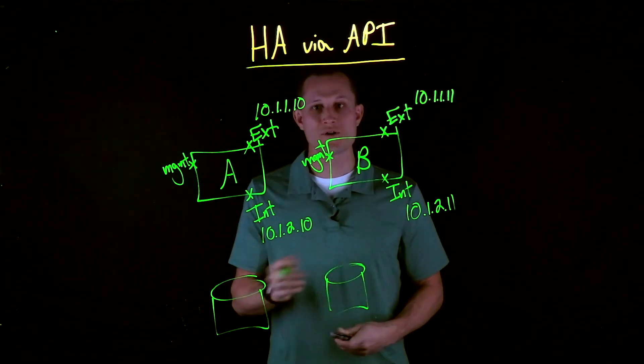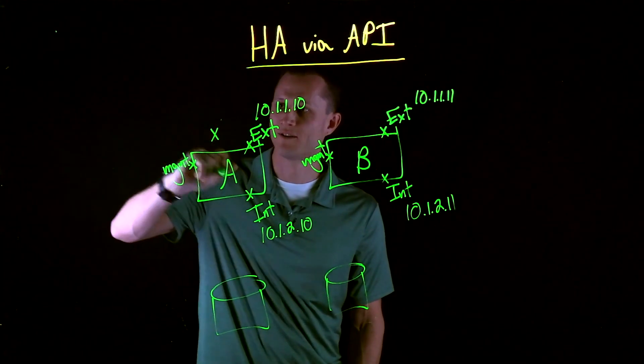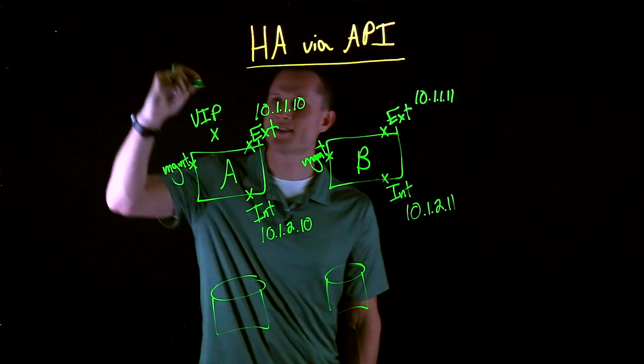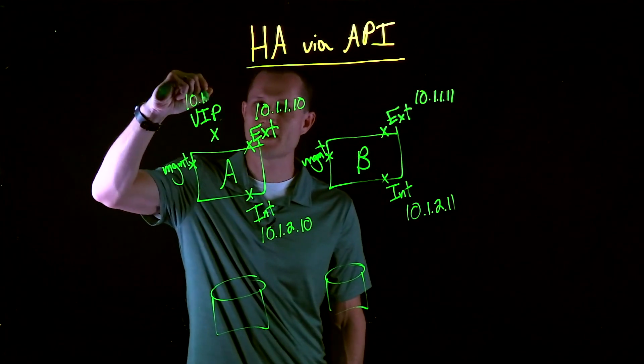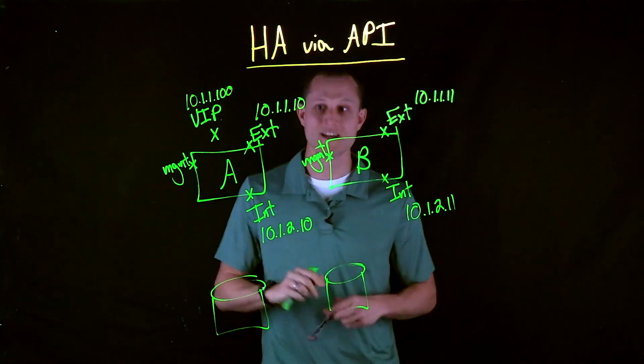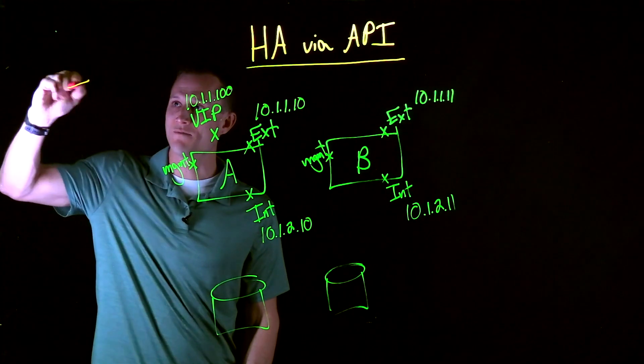What we need now is our floater address for our VIP config. So let's put that up here. And we're going to put it in the same range. We'll call it 10.1.1.100. This needs to be configured on the active device. The reason why... Let's draw some of this stuff up over here.